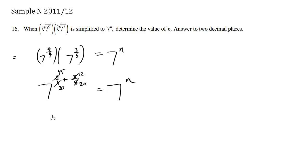So ultimately, we get 7 to the 45 plus 12 is 57 over 20 equals 7 to the n.